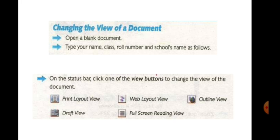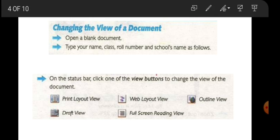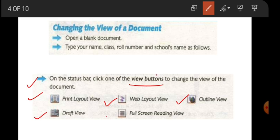Now we will change the view document. This is a little activity. First we will open a blank document after opening Word 2007. We will open a new document, then inside it type name, class, roll number, and school. After that, click the view buttons on the status bar. There are 5 buttons for 5 views: print layout view, web layout view, outline view, draft view, and full screen reading view.